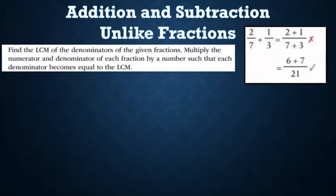For example, 2/7 + 1/3 will not be equal to (2+1)/7. Instead, we take the LCM of 7 and 3, which is 21. We multiply 2 by 3 to get 6, and 1 by 7 to get 7, so it becomes (6+7)/21 = 13/21. Therefore, 2/7 + 1/3 = 13/21.